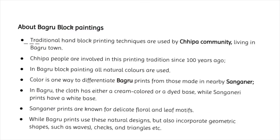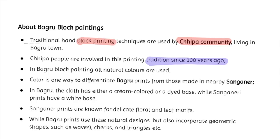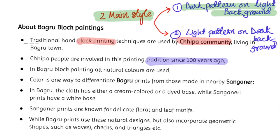These hand block printings are traditionally done by the Chippa community, the main inhabitants of Bagru village, who have been involved in this tradition for over 100 years. Traditionally there are two main styles of Bagru block printing: the first uses dark patterns on a light background, and the second creates light color designs on a dark background.